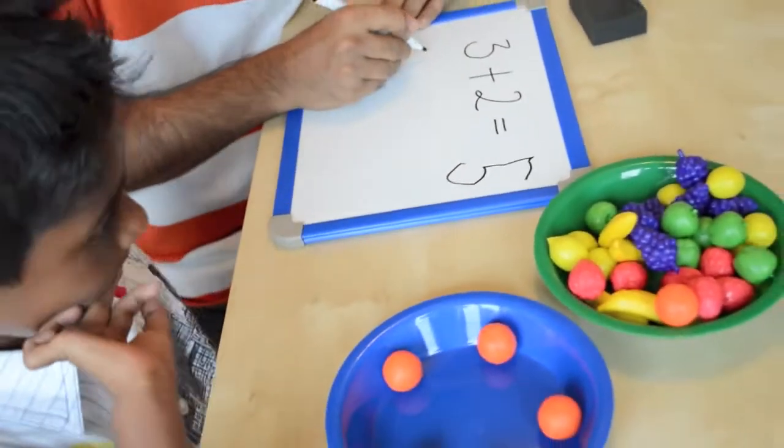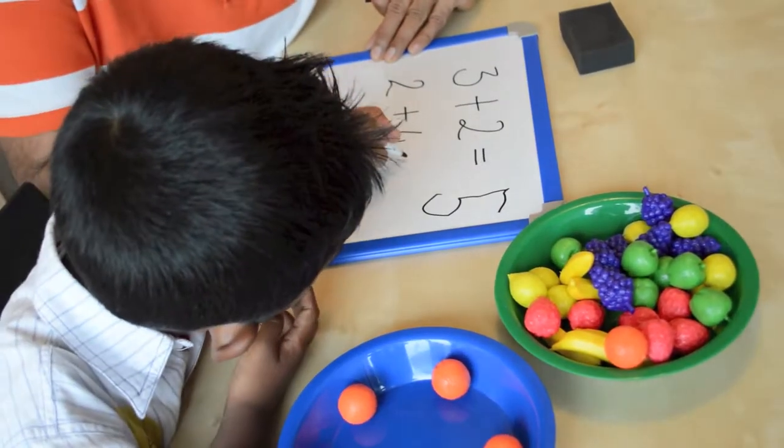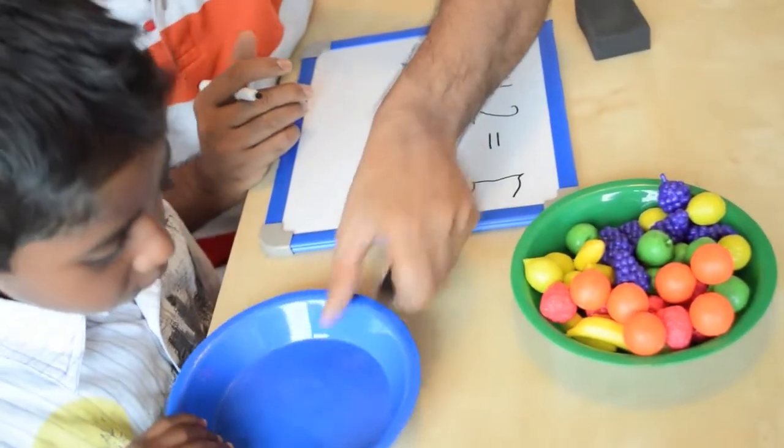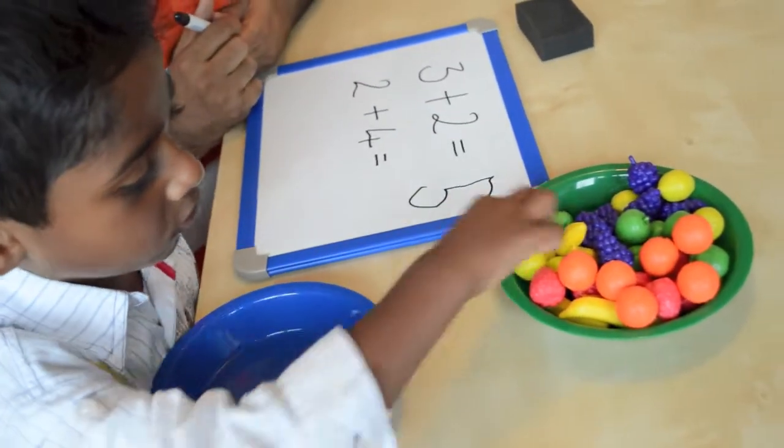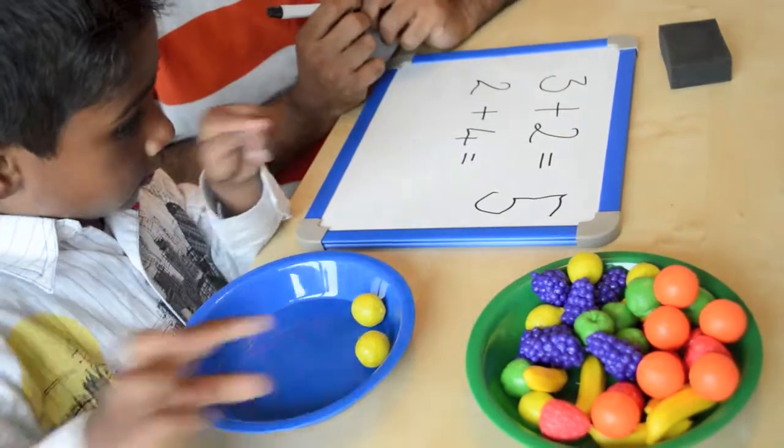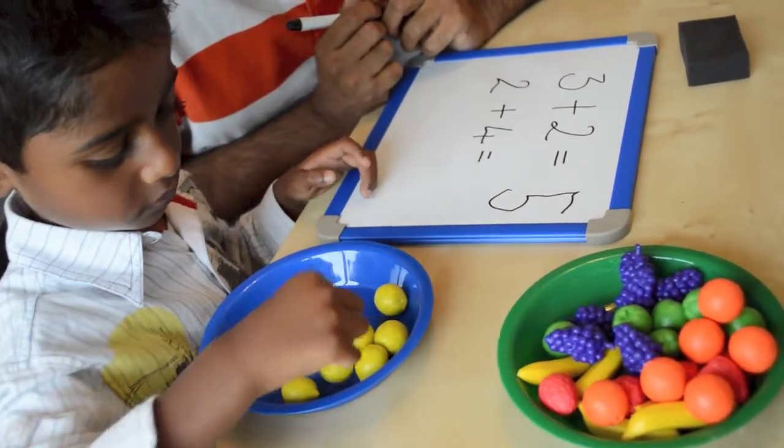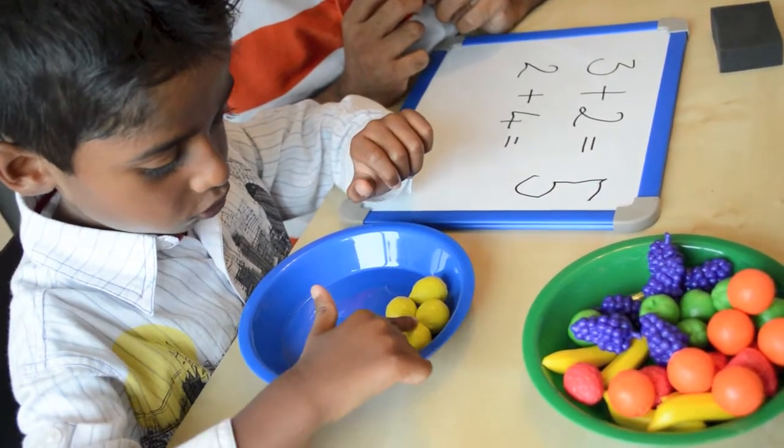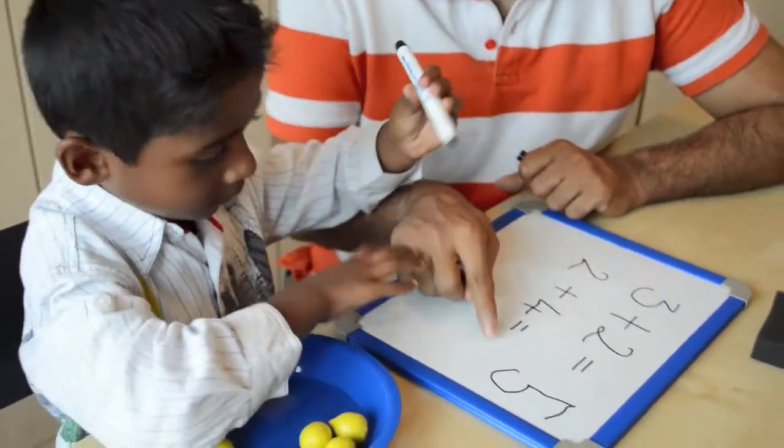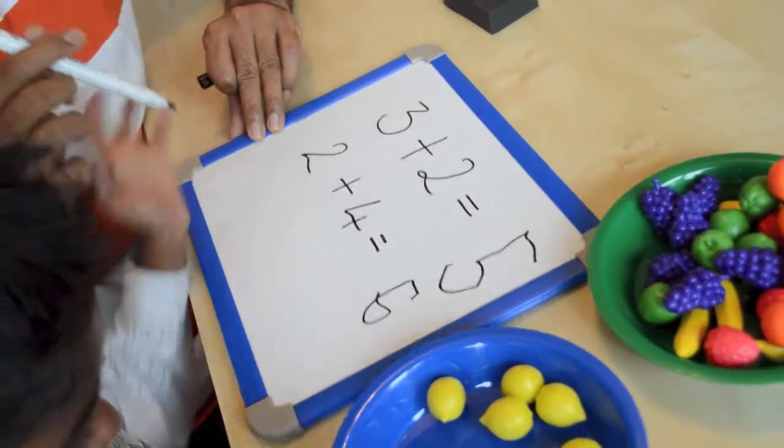Shall we have another go? Okay, I think we will do two add four. Let me put the fruit back in. Can you get me two lemons, please? So that's one and that's two. Now can you get another four for me? One, two, three, four. Now how many lemons are in this? Six. Brilliant. Would you like to write down the number six for me next to the equal sign? Wonderful. So far you've got two out of two.